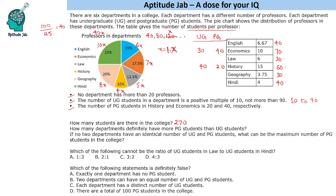Question 2: How many departments definitely have more PG students than UG students? Looking at Economics, it has 40 PG and 30 UG students — so it definitely has more PG. For the other departments, we can always arrange the UG and PG values so that UG is higher (for example, 30 UG and 10 PG). So we cannot say they definitely have more PG students. Only Economics definitely does, so the answer is 1.